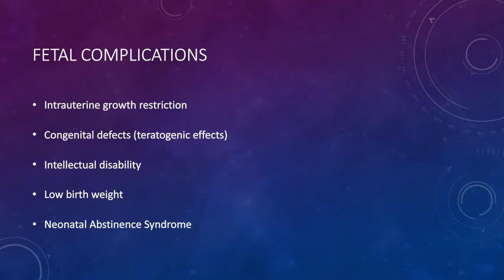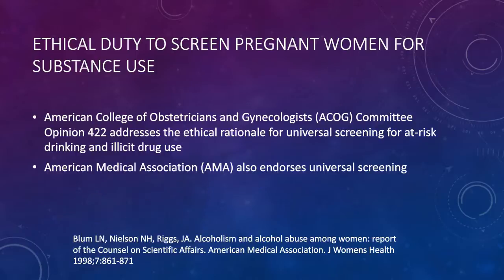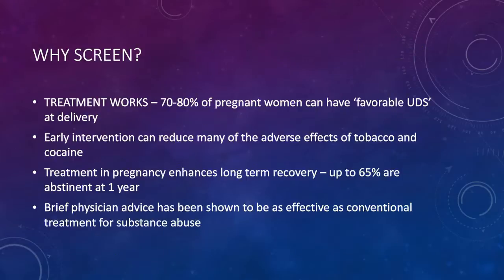We screen because substance use disorders are treatable. We also have an ethical duty: ACOG Committee Opinion 422 addresses the ethical rationale for universal screening for at-risk drinking and illicit drug use. The American Medical Association also endorses universal screening. Treatment works, especially in pregnant women — 70 to 80% can have a favorable urine drug screen at delivery. Early intervention reduces adverse effects of tobacco and cocaine, enhances long-term recovery, and up to 65% of patients are abstinent at one year. Brief physician advice has been shown to be as effective as conventional treatment.